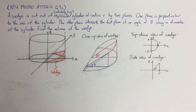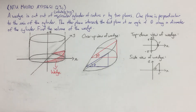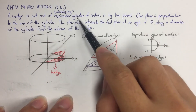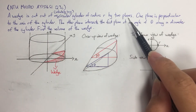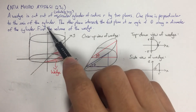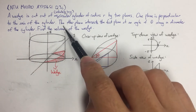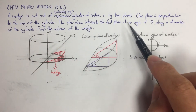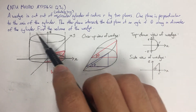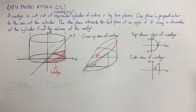We have the last question of this paper, question 7C. I think it's one of the hardest questions in this paper. It reads: a wedge is cut out of an infinitely long circular cylinder of radius r by two planes. One plane is perpendicular to the axis of the cylinder, and the other plane intersects the first plane at an angle of theta along a diameter of the cylinder. Find the volume of the wedge.